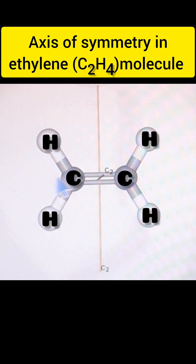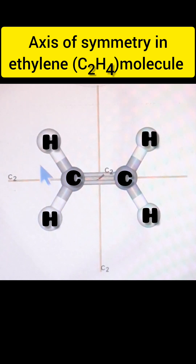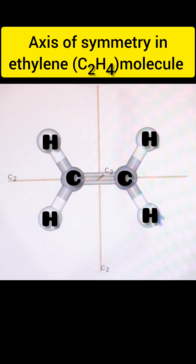The next C2 axis passes through the carbon-carbon atoms like this. Along this axis we rotate the molecule 180 degrees, and after the rotation this hydrogen atom will move to this position, this hydrogen atom will move to this position, and these two hydrogens also change their position. When we rotate the molecule 180 degrees we get the same configuration before and after the rotation.